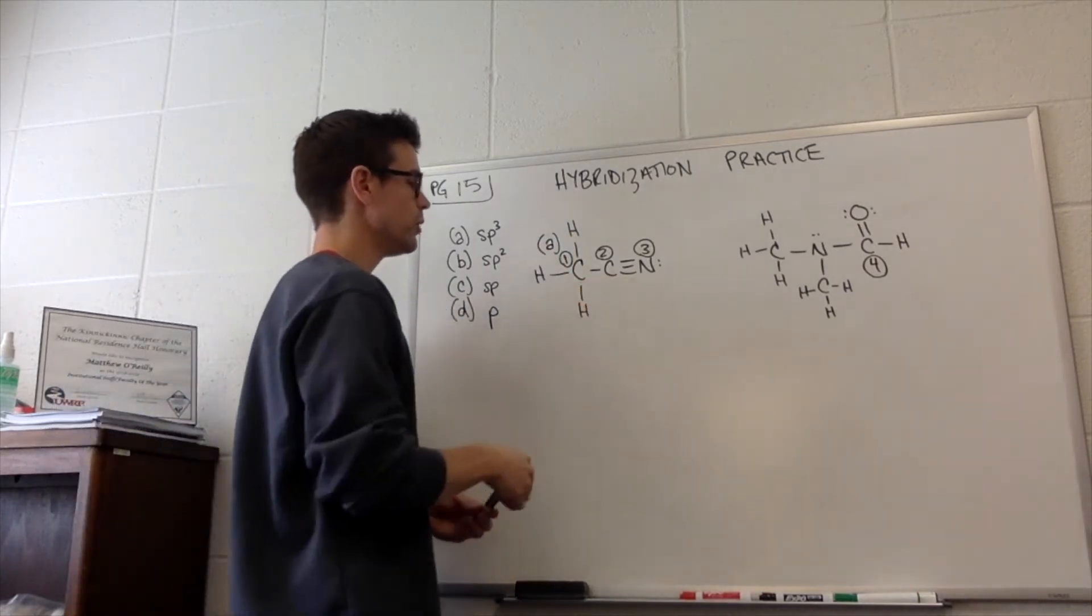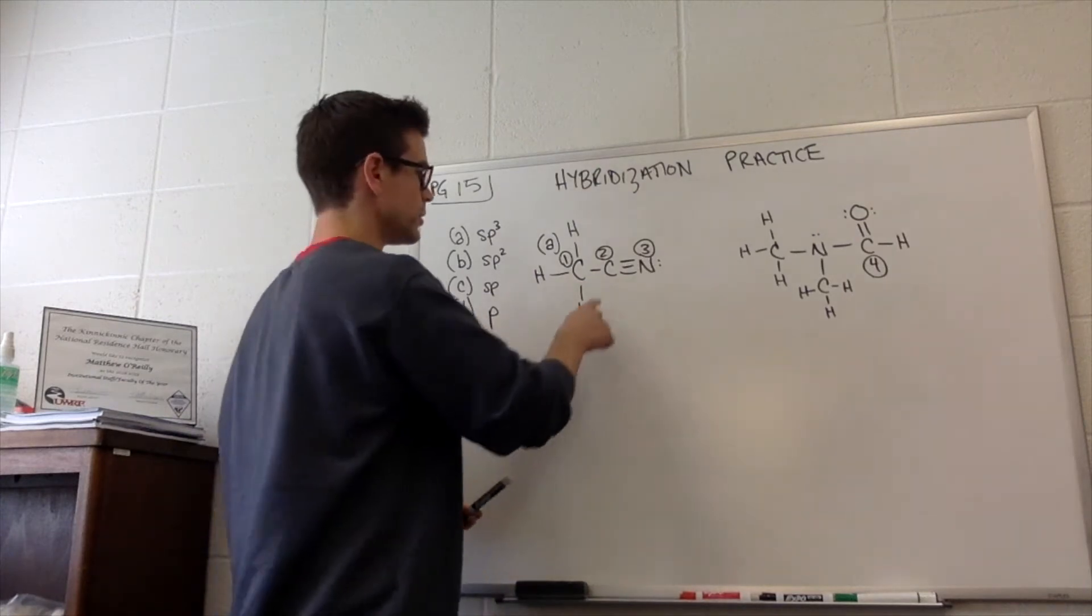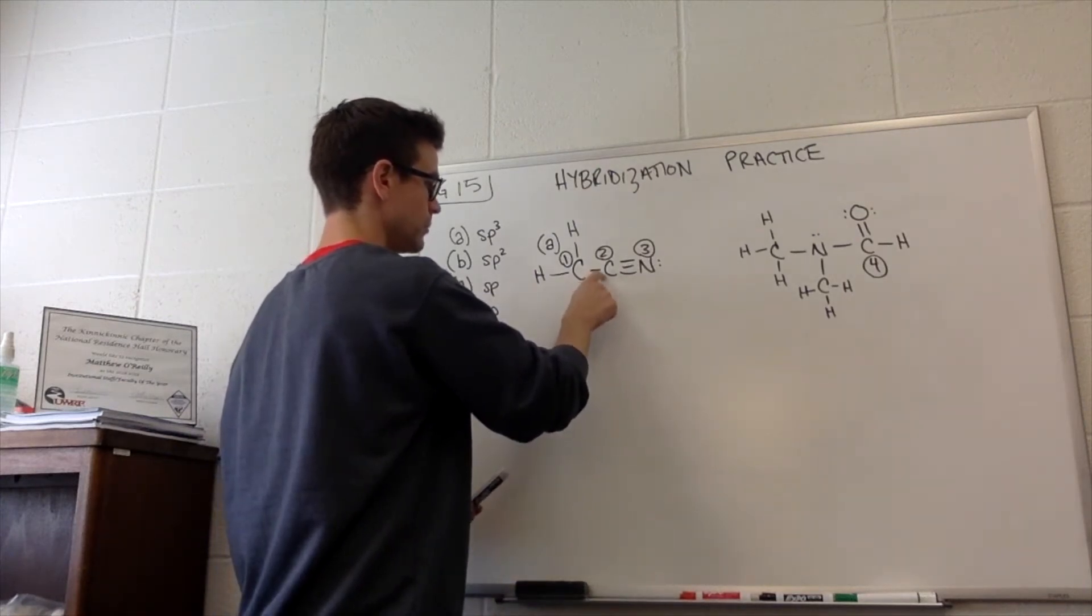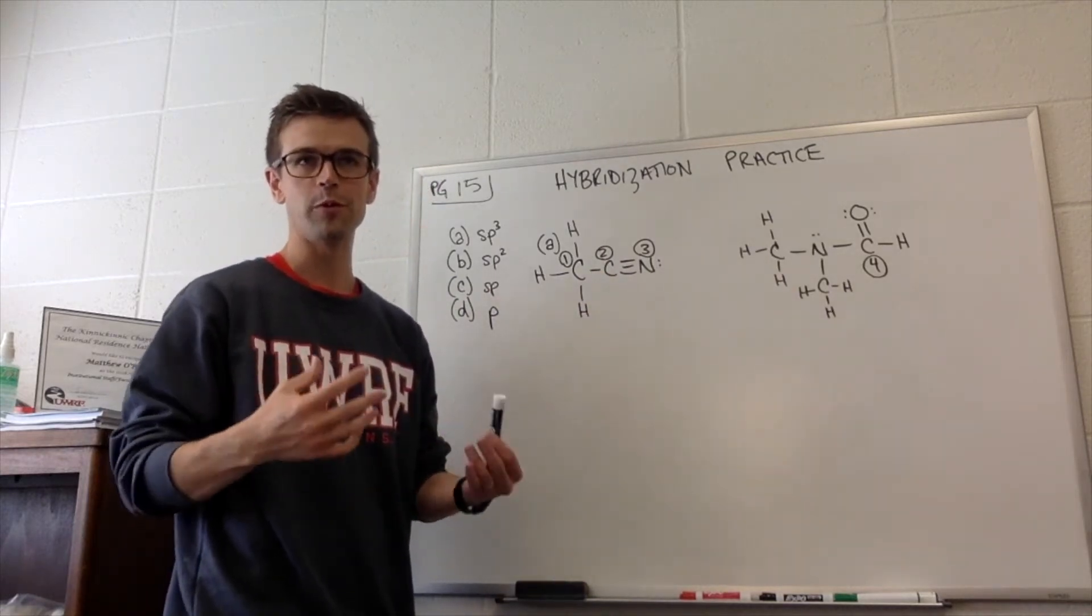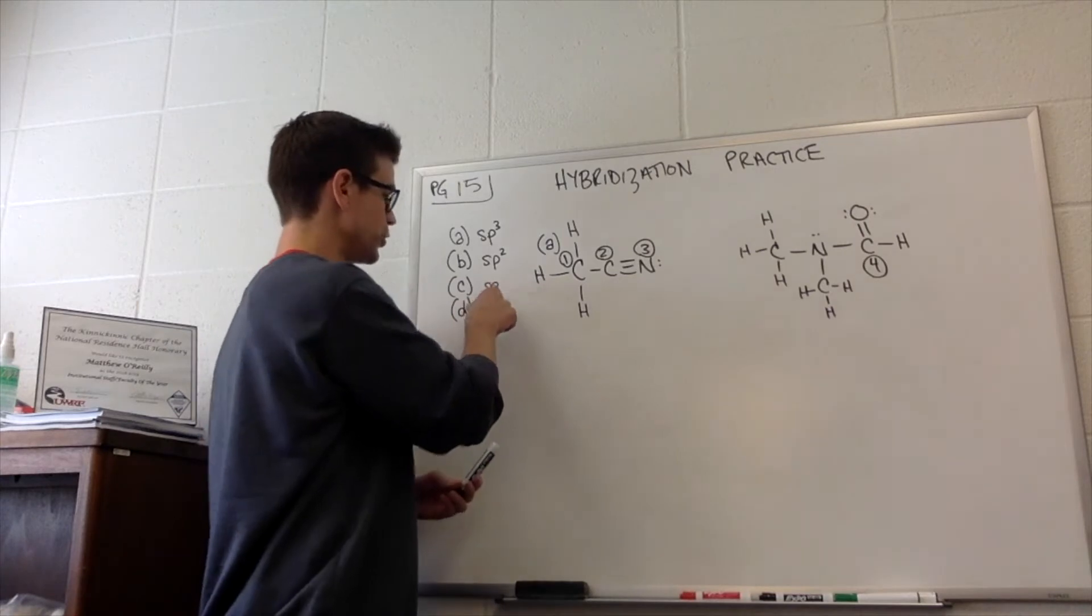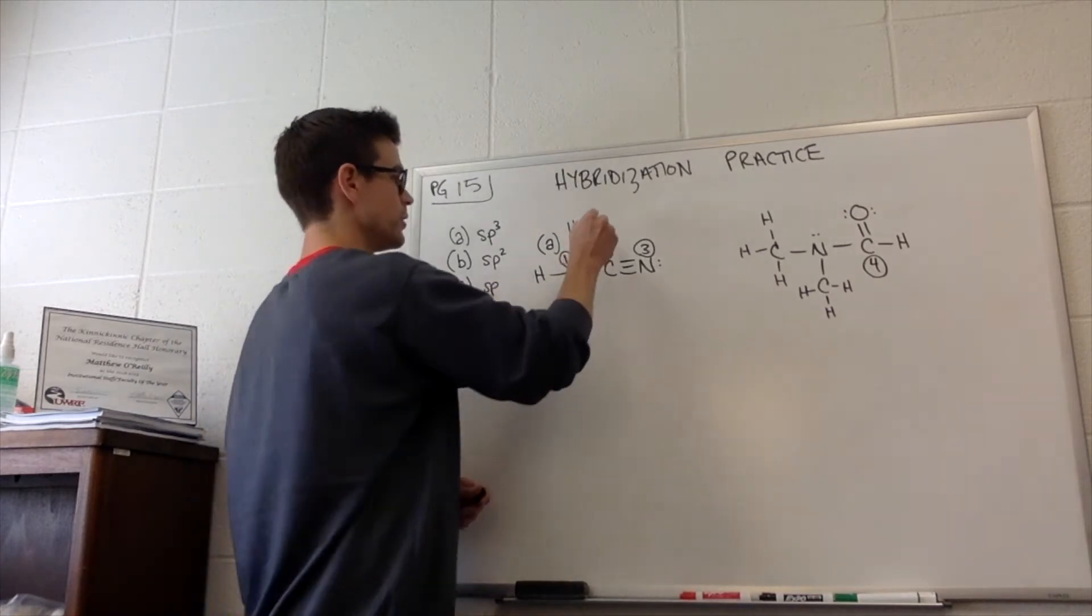What about two? Two has two different groups, this C-C bond and this C-N triple bond. Two groups, you need one hybrid orbital per group, so that's two different sp orbitals. So this would be C.